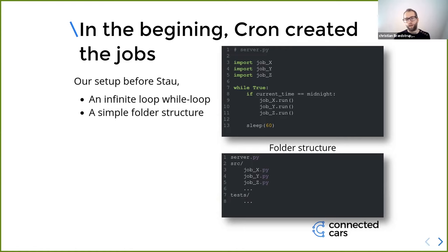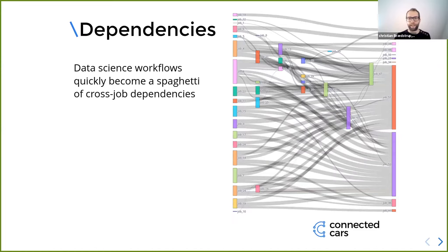We have a simple folder structure — a single source folder where all our scripts are located. Our dependency graph is complex — every box is a job, everything on the left has no dependencies of its own, everything on the right is not a dependency for any other jobs. In the middle we have some jobs that really depend on a lot, so we needed a solution that would handle that dependency.